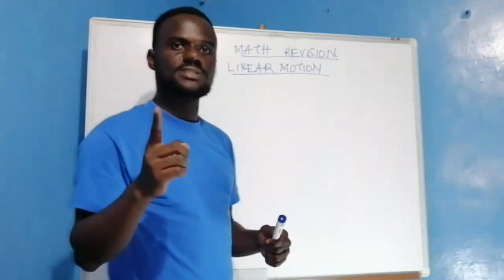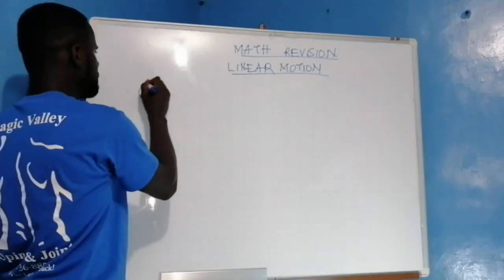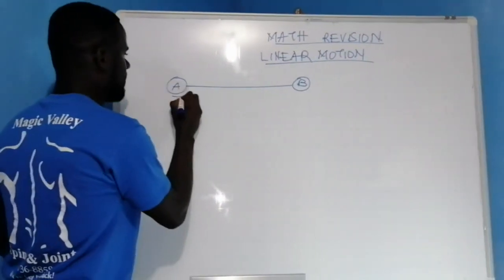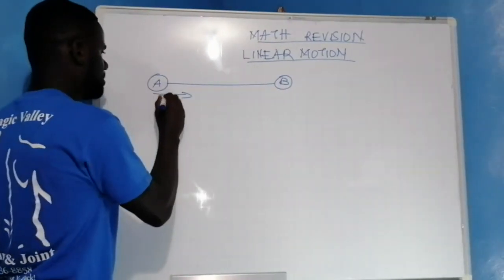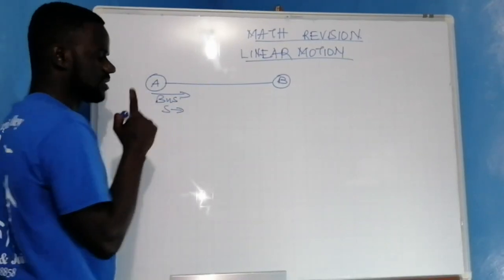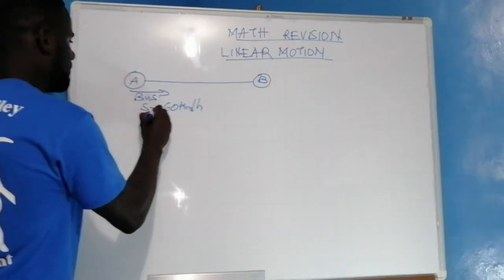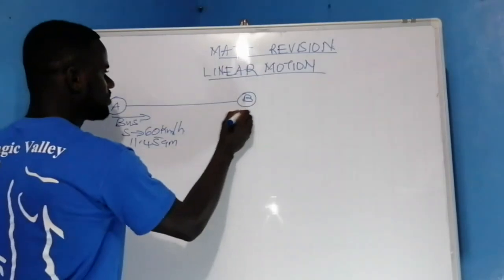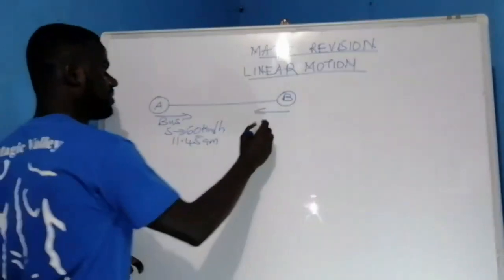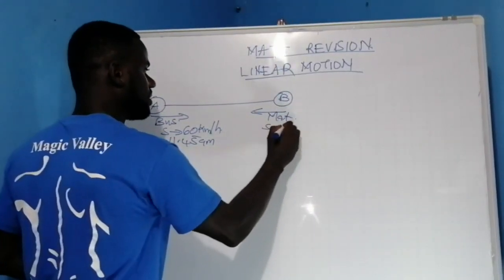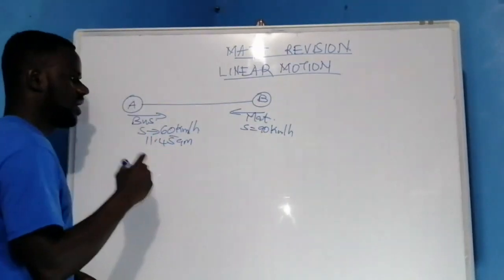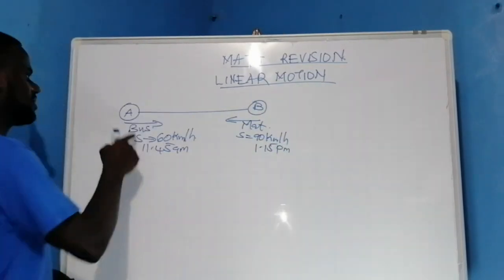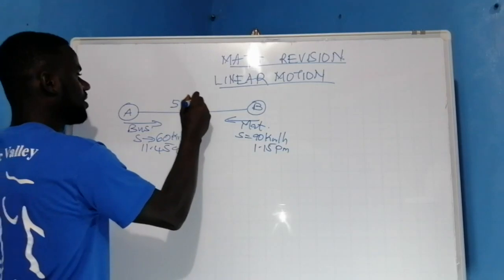We're told that a bus left town A to town B. Picture town A to be somewhere here and town B to be here. The bus is leaving town A to town B at a speed of 60 kilometers per hour at 11:45 a.m. The matatu is leaving town B towards town A on the same day at a speed of 90 kilometers per hour at 1:15 p.m. The distance between town A and town B is 540 kilometers.